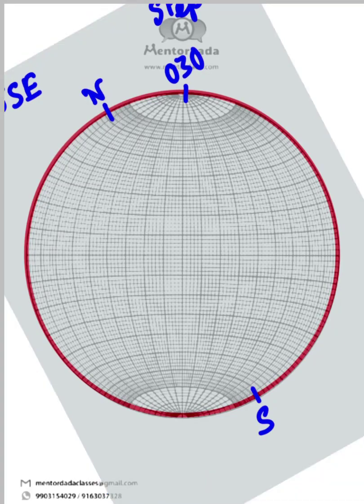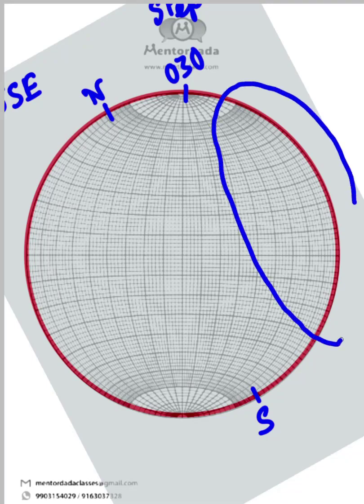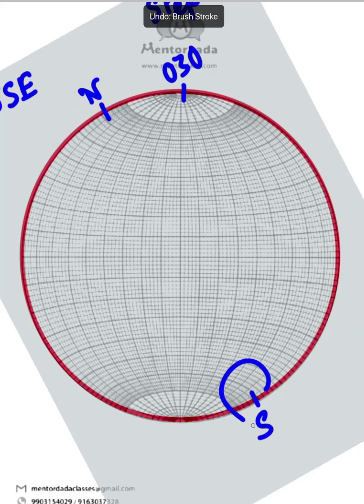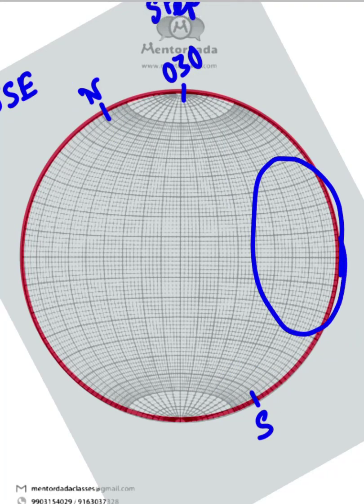As we know that the plane is dipping towards southeast direction, so this part of the stereonet is the southeast direction. Because this is north, this is south and this direction somewhere will be southeast direction.